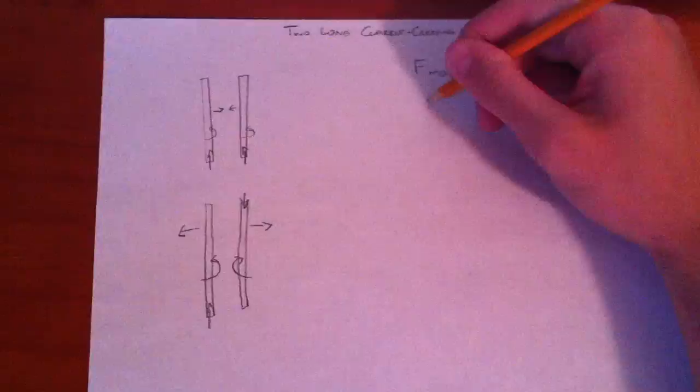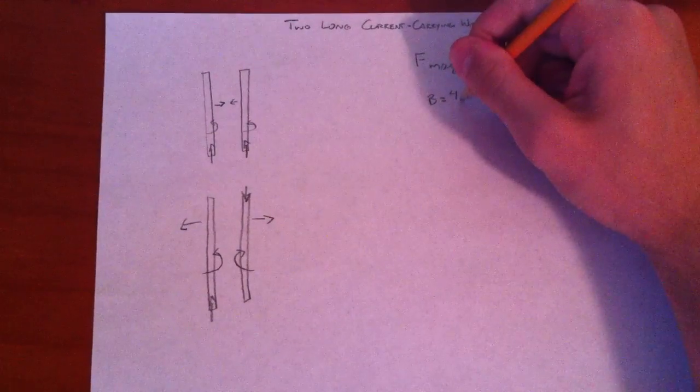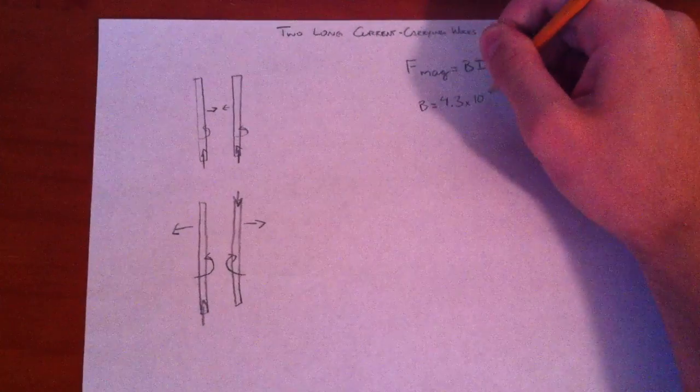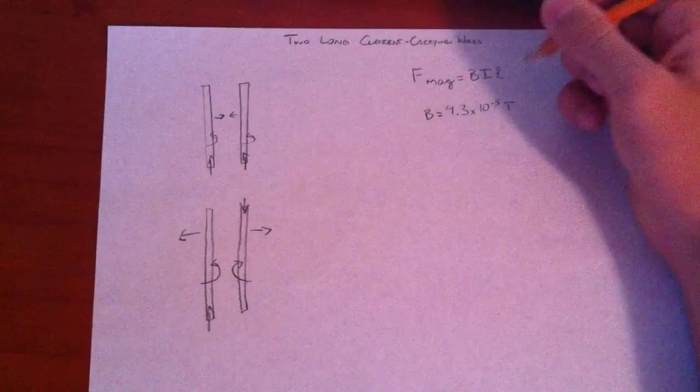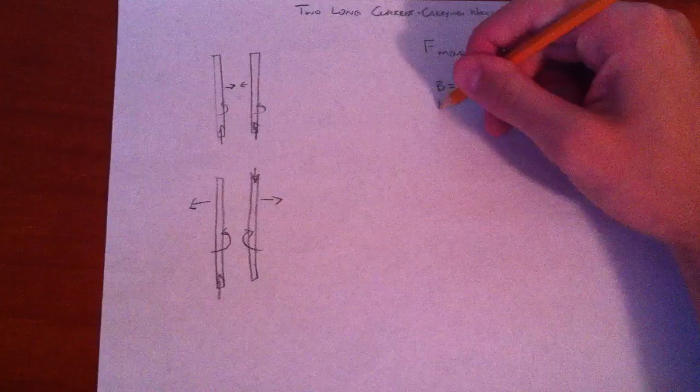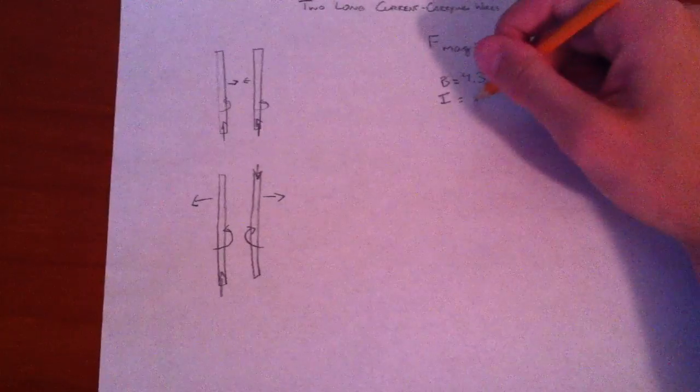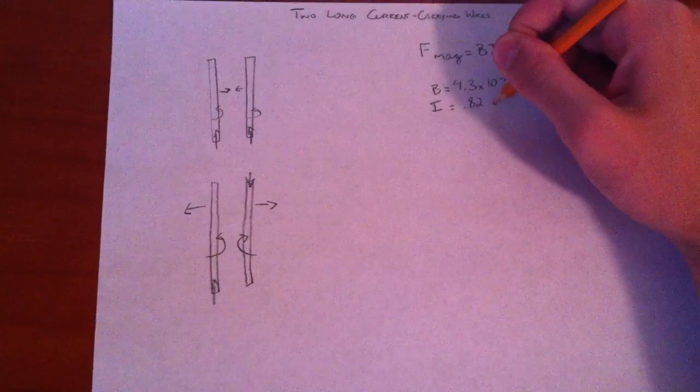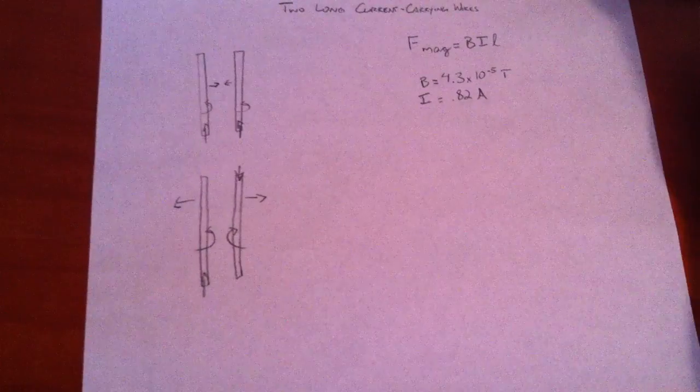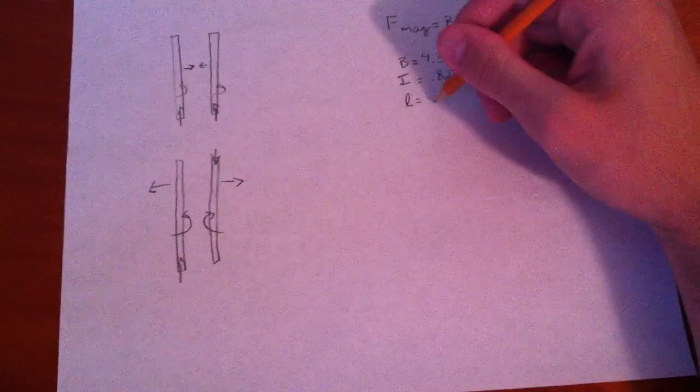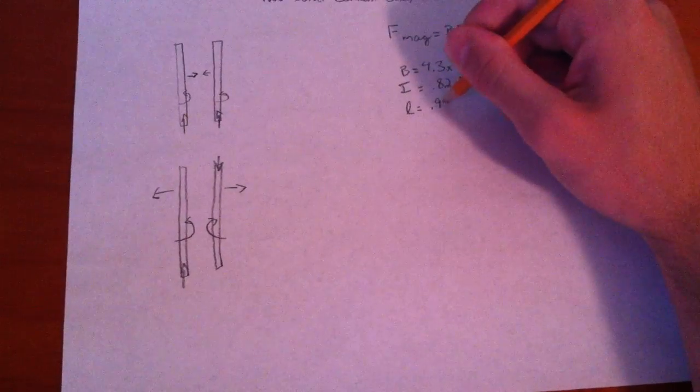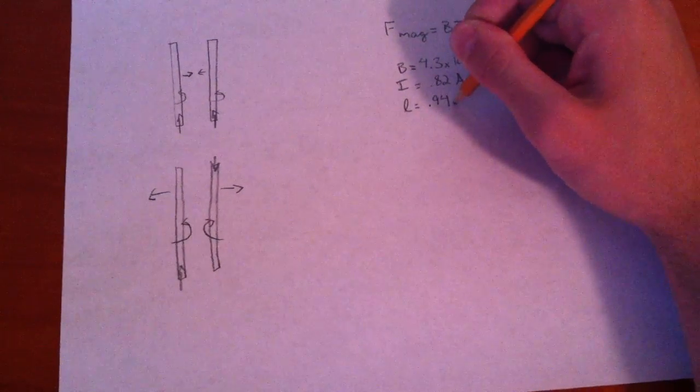So we're going to say that B equals 4.3 times 10 to the negative fifth Tesla. Let's say the current is 0.82 amps. I'll make the length of the wires to be both 0.94 meters.